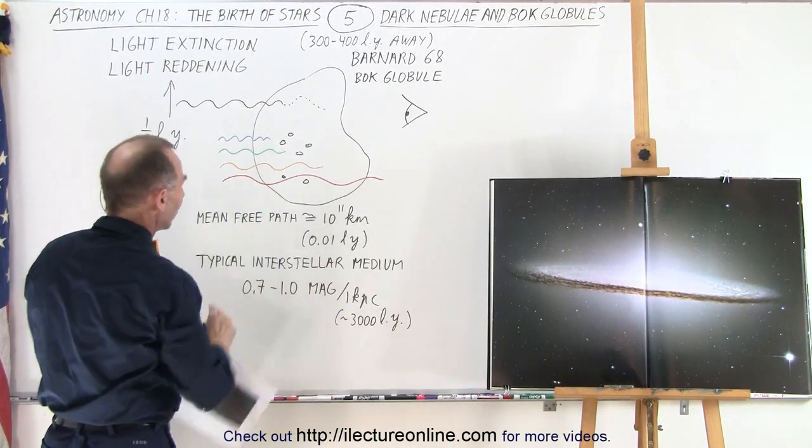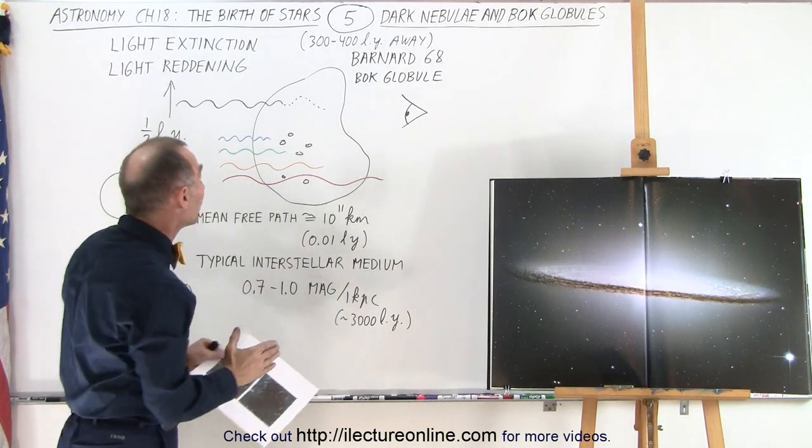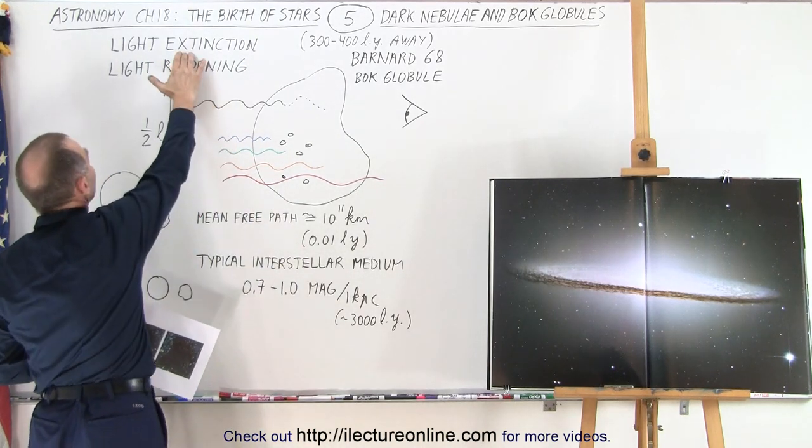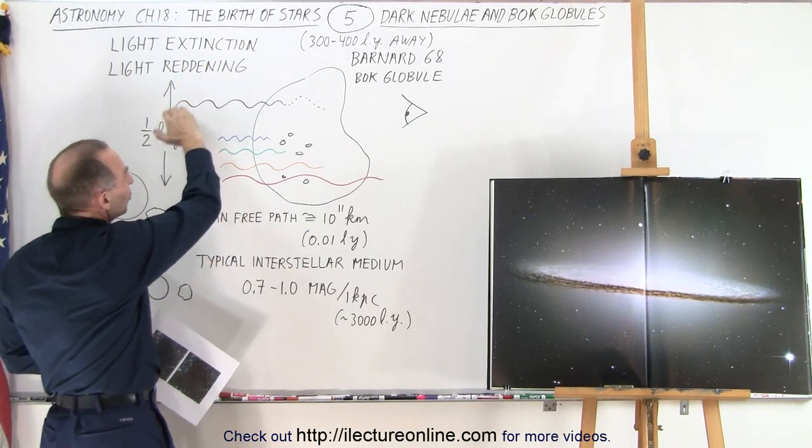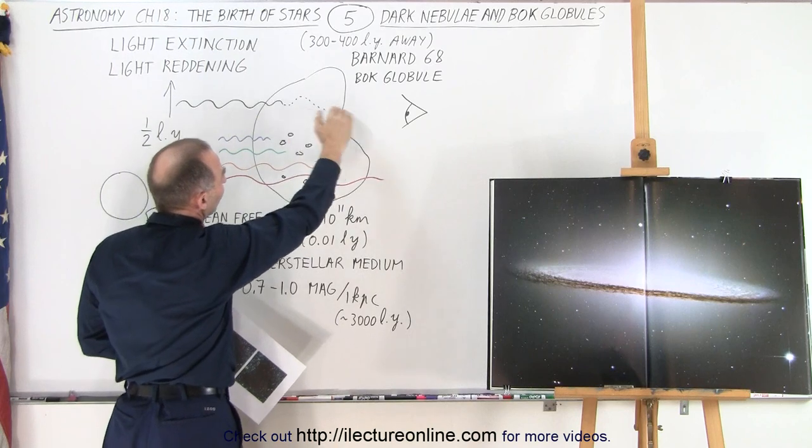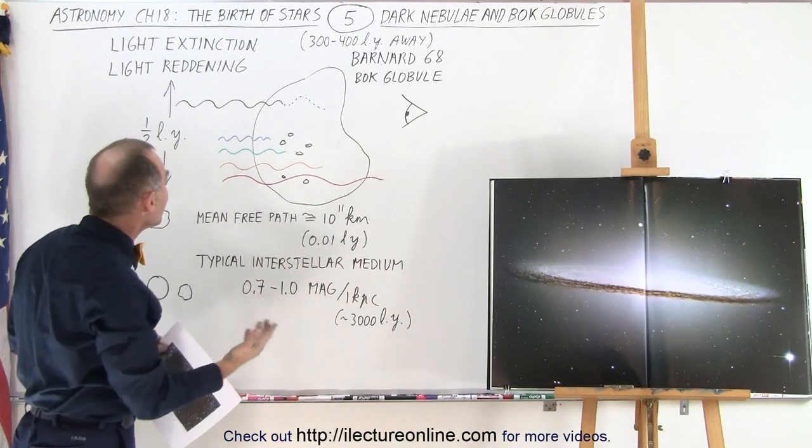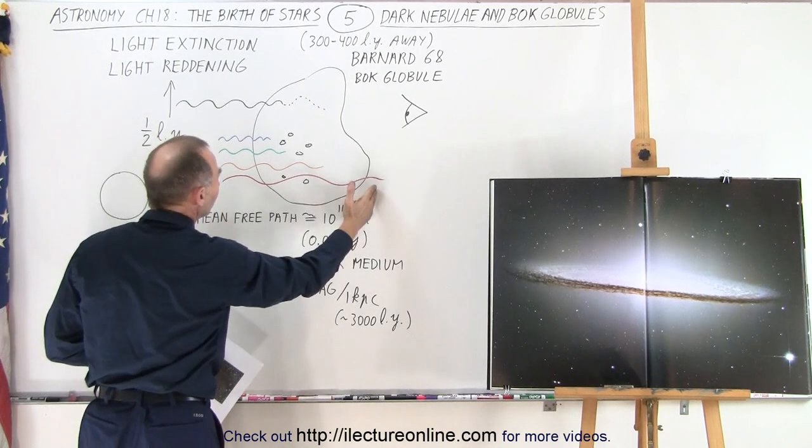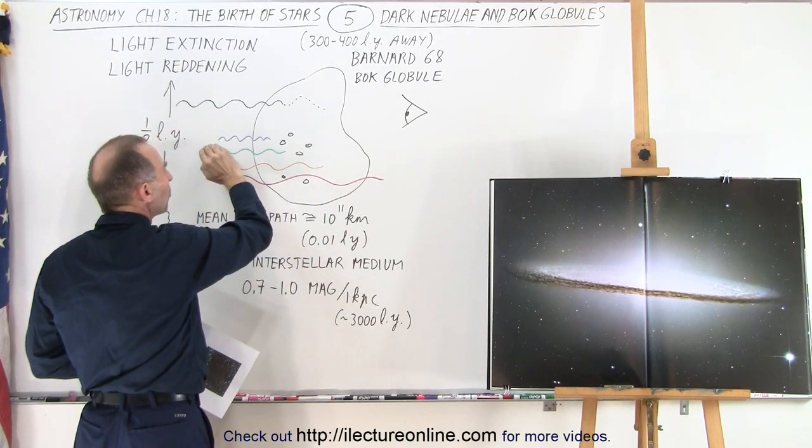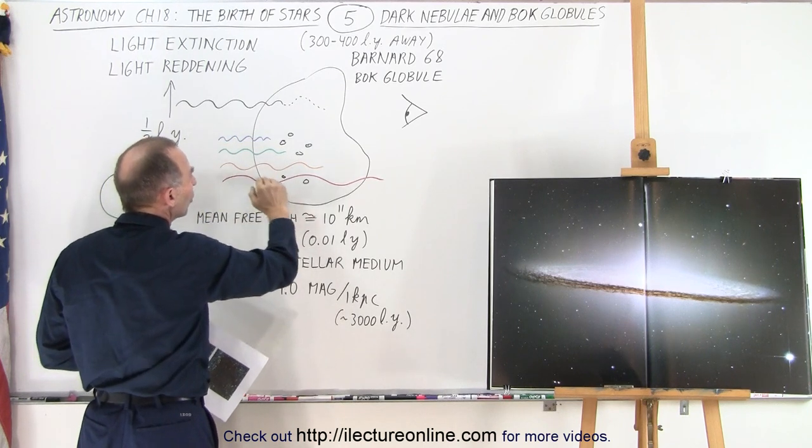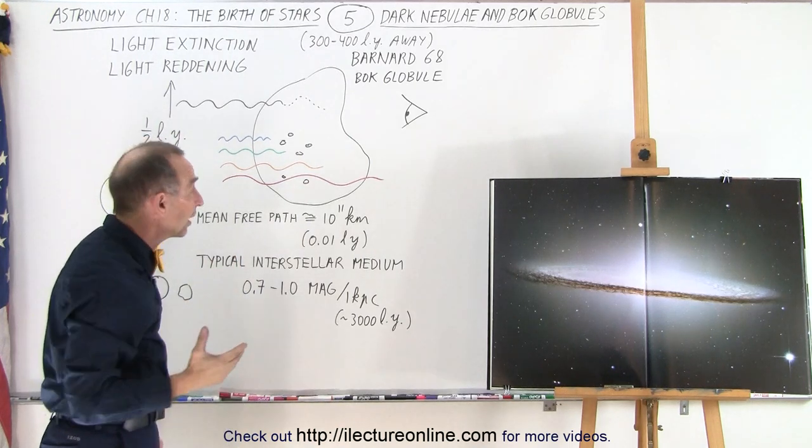So the light that tries to go through the nebula experiences what we call light extinction and light reddening. Extinction means that the light tries to make it through, but before it gets to the other side it's completely scattered out. Light reddening means that some of the light makes it through and some doesn't. The light is composed of the smaller wavelength blue light as well as the very long wavelength red light and all the colors in between with various sizes of wavelengths.